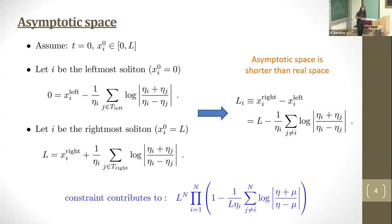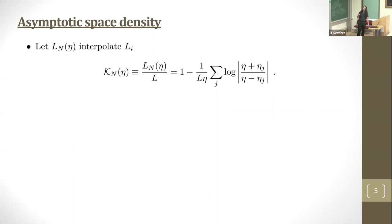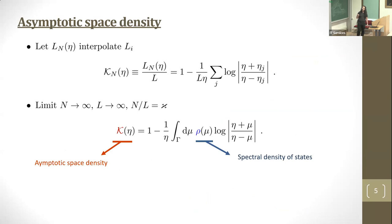Ultimately, I can rewrite my constraint this way. I'm interested in the limit where L becomes very large. I'll introduce L(η), a function interpolating between all Li. I'll take the limit n and L go to infinity while keeping the spatial density of solitons constant. This equation becomes this one, where I've introduced the spectral density of states and k, which is the asymptotic space density—a ratio between asymptotic space and physical space.